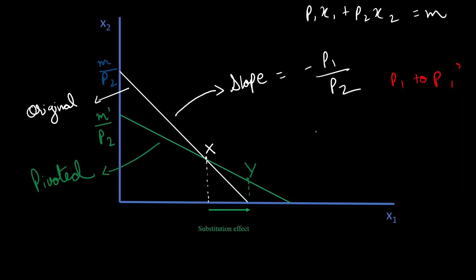So, that's exactly what we're going to do in this case. And you'll notice how our intercept is changing because our income changes from M to M dash. And I'll show you how to do that calculation in the next slide. But first, let's just take a look at this pivoted budget line.